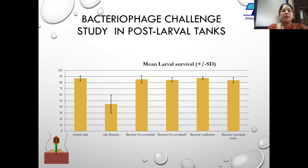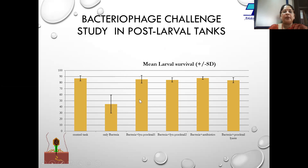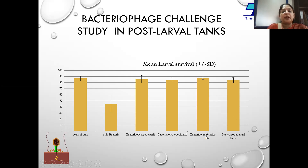These are the results of some challenge studies done in six tanks under laboratory conditions in a post-larval tank. The first tank is a control with no Vibrio and no phage added. In the second tank only Vibrios were added; in all other four tanks Vibrio along with phages or antibiotic was added. When only Vibrio was added, survival was only 45 percent, whereas when Vibrio was added along with phages or antibiotic, survival was as good as the control. The efficiency of the bacteriophage is as good as the best antibiotic.